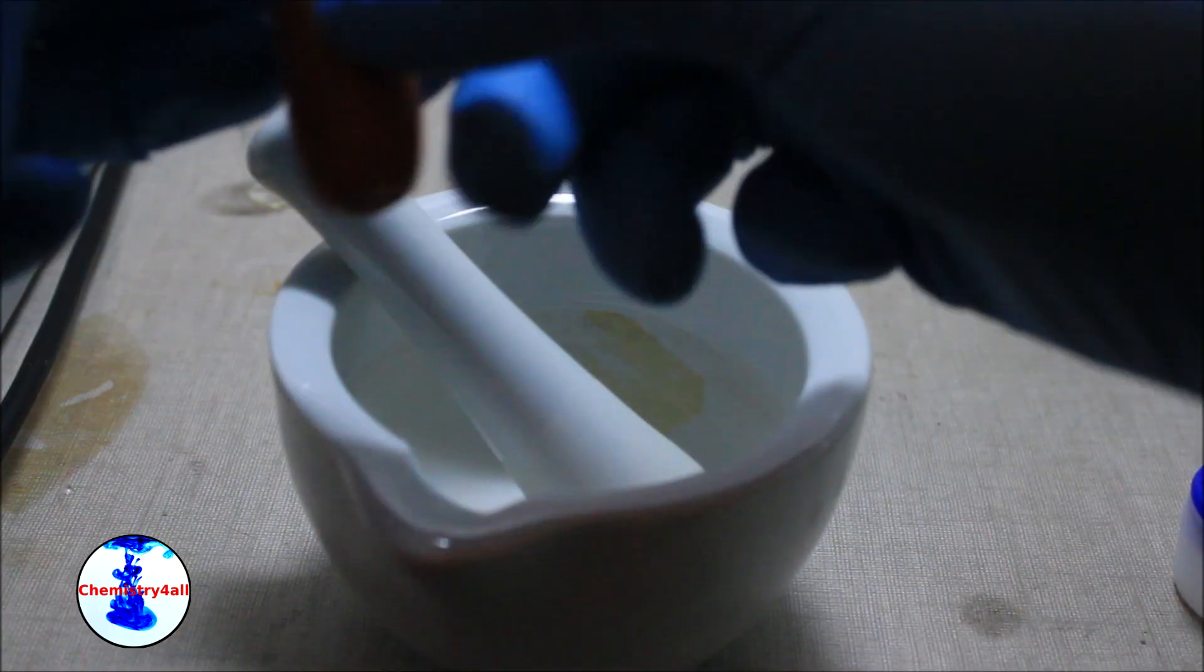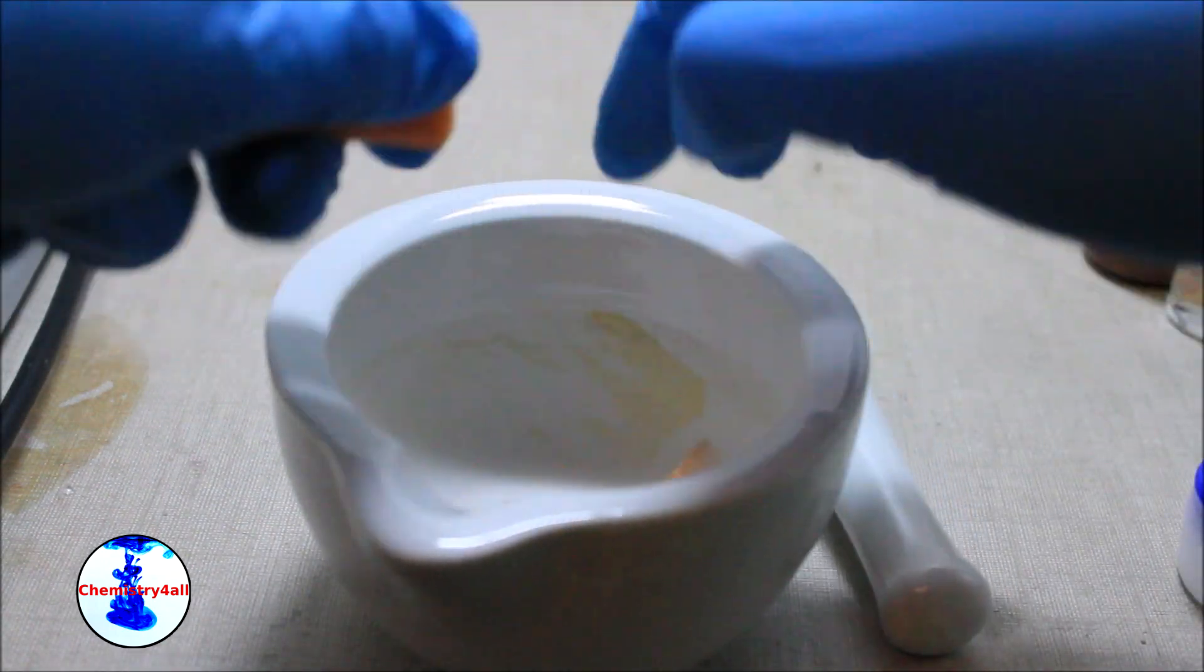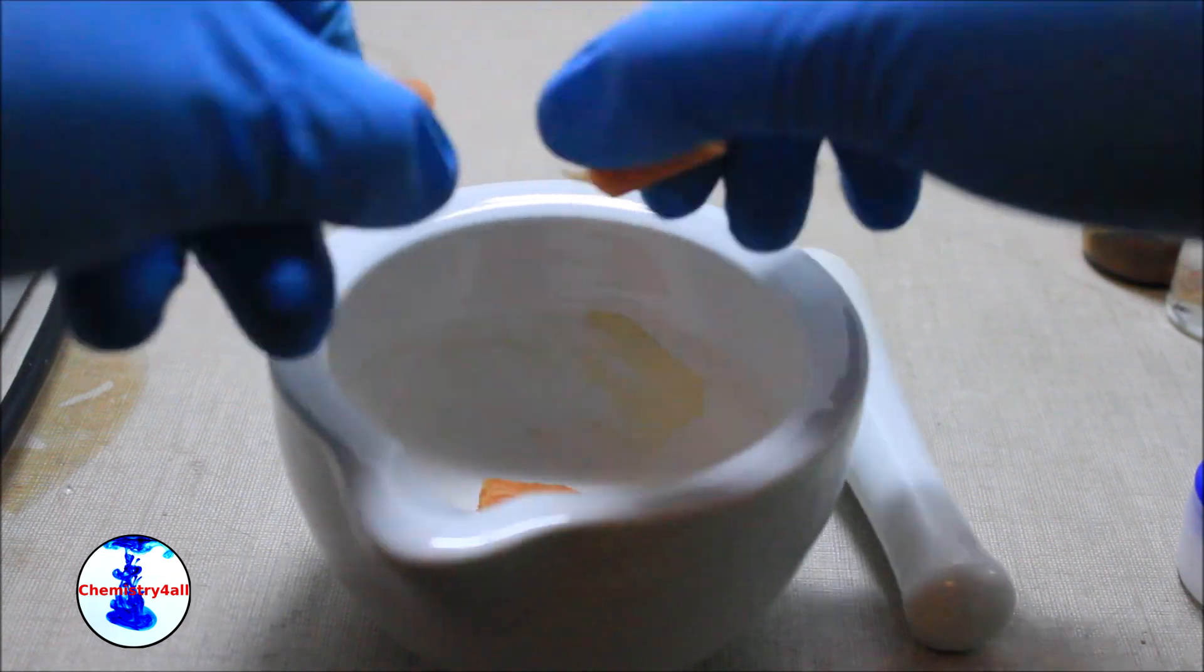First, we will isolate the trans-beta-carotene out from the carrot. To do so, a previously boiled carrot is cut in small pieces and placed into a mortar.